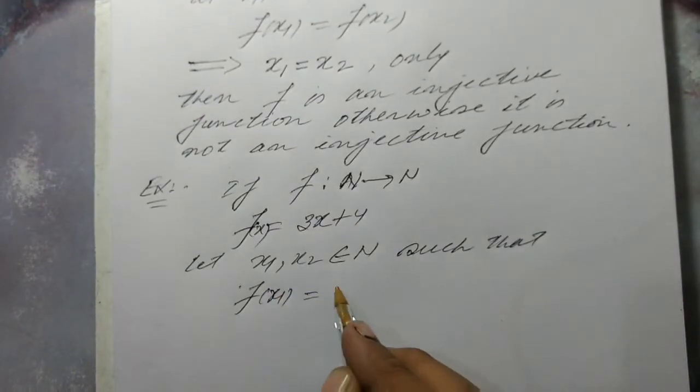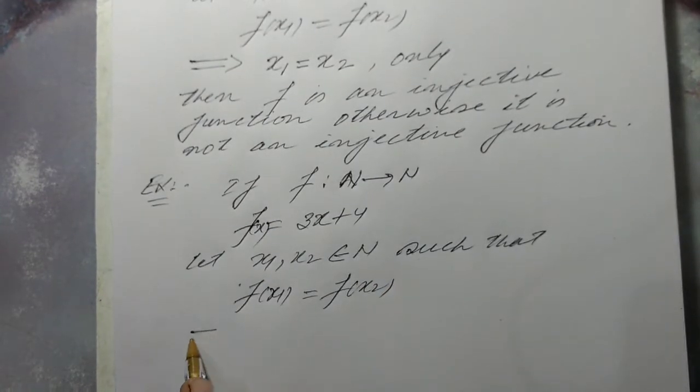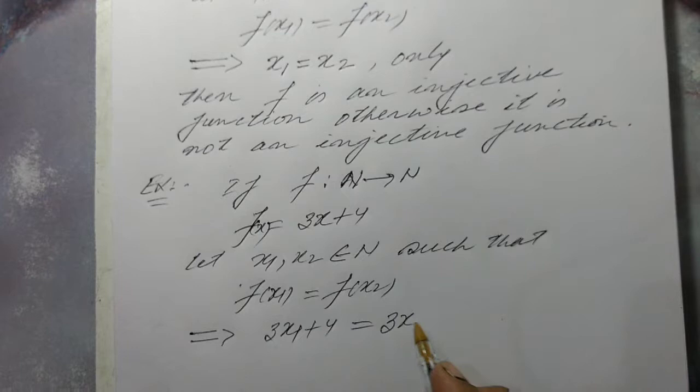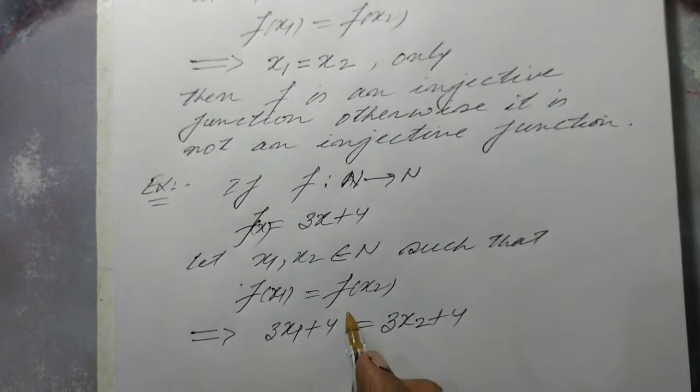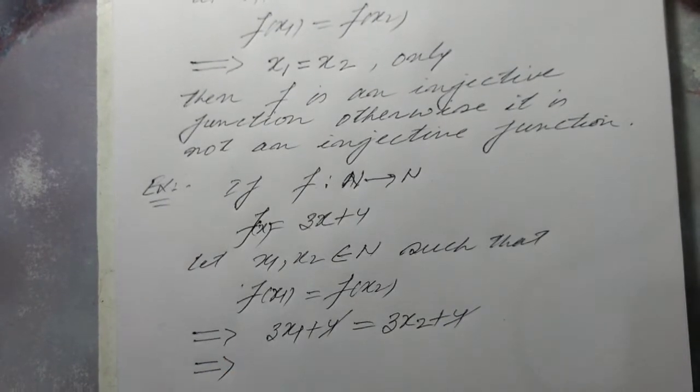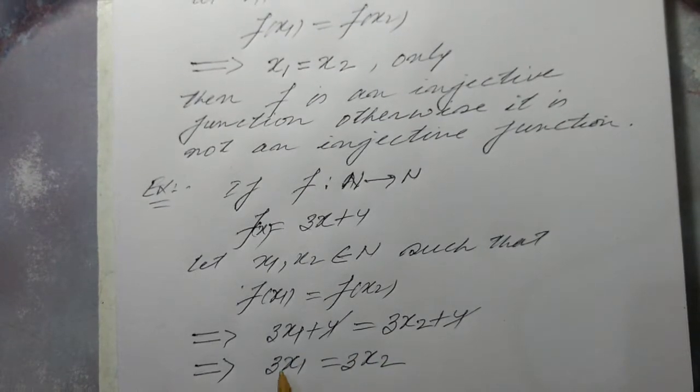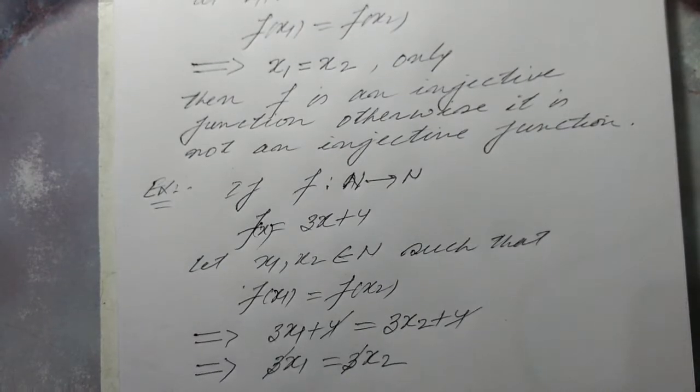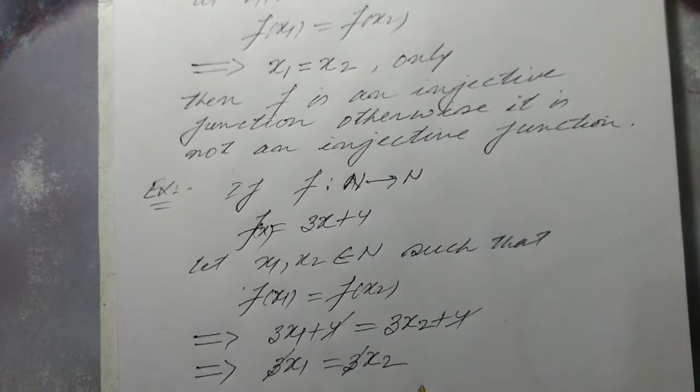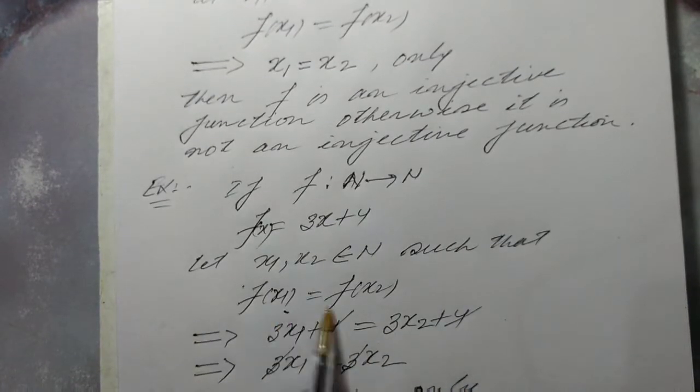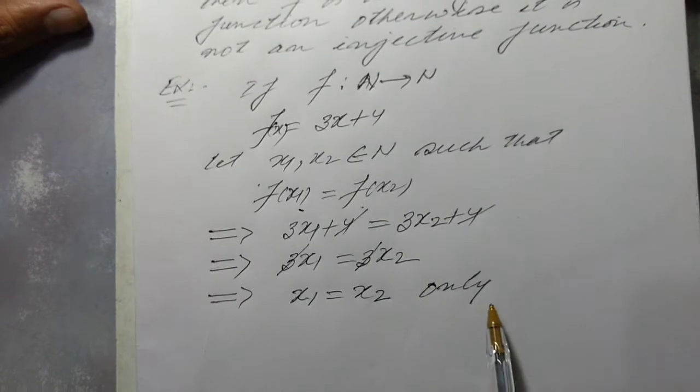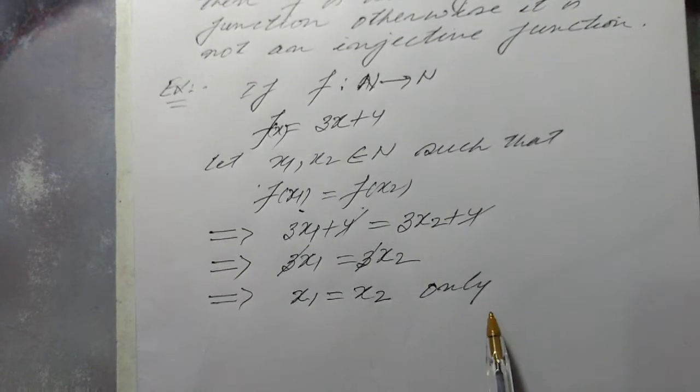So it implies that 3x1 plus 4 is equal to 3x2 plus 4. So 4 is cancelled by 4, ultimately we have 3x1 equals 3x2. Now dividing both sides by 3 we get x1 is equal to x2 only. So taking f(x1) is equal to f(x2) we get only one condition that is x1 is equal to x2, so we may say that f is an injective function.